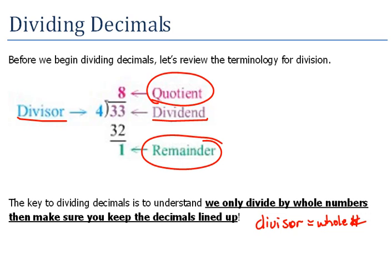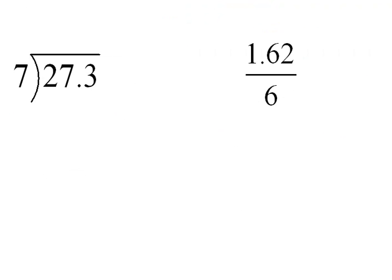So let's do a practice problem here and see if we can see what's going on. Here we have 27.3 divided by 7. So our divisor here is a whole number. That's exactly what we need. As long as the divisor is a whole number, we just line up our decimals and then we ignore them. And we just start dividing like it was just plain numbers. 7 will go into 27 three times.